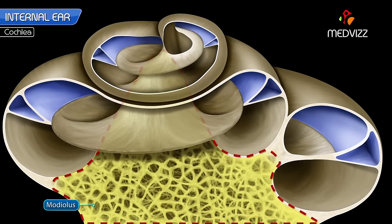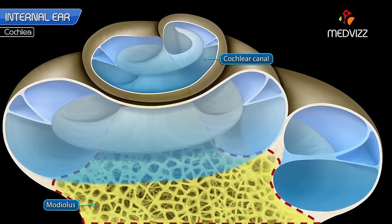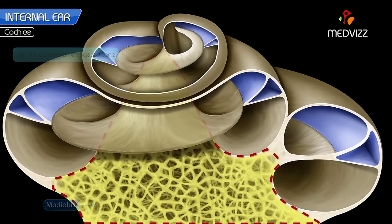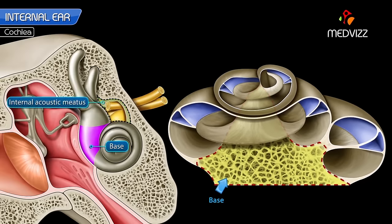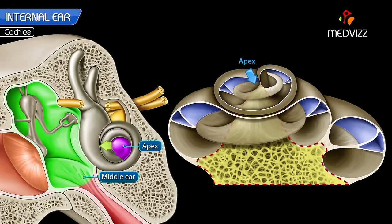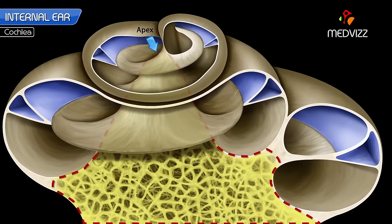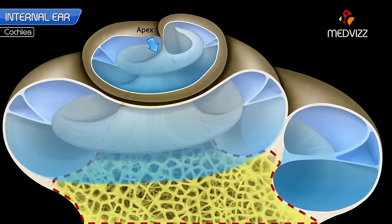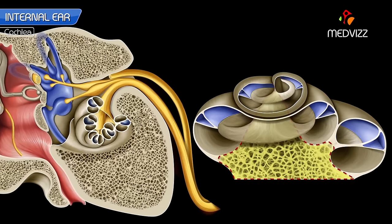The modiolus is an axial bony stalk around which the cochlear canal spirals. It is an elongated cone. The base of the modiolus lies at the fundus of the internal acoustic meatus, and the apex is directed towards the middle ear. The apex of the modiolus is overlaid by the apical turn of the cochlear canal. The modiolus is perforated spirally at its base in the internal acoustic meatus by the fibers of the cochlear nerve.